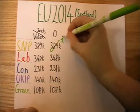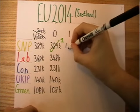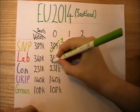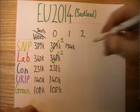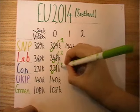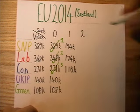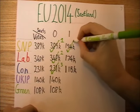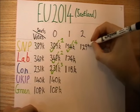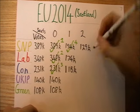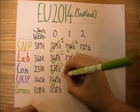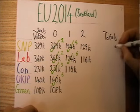In this case, that means the SNP wins the first seat. We now work out a new quotient for them, since they now have a seat. Labour's quotient is now the highest, so they get the second seat, and we calculate a new quotient for them. Next the Conservatives are in the same boat. Then it's the SNP that gets the second seat because their quotient is the highest, and we generate a third quotient for them. This then happens for Labour, and then UKIP get the final seat, as their quotient is the highest left on the table.